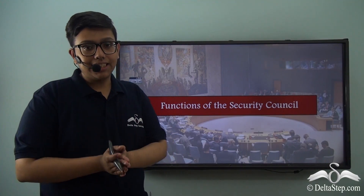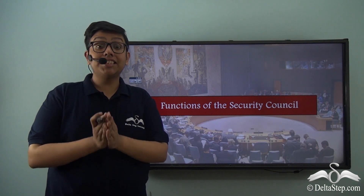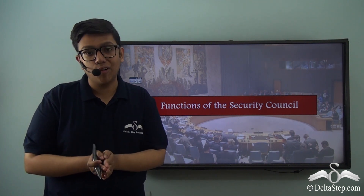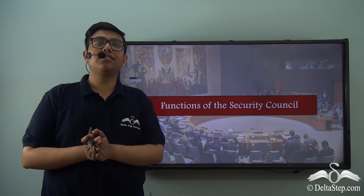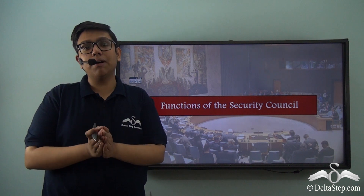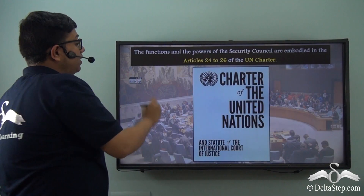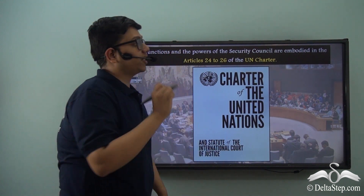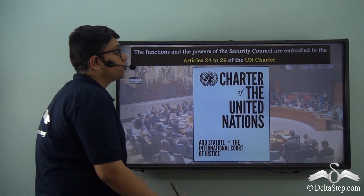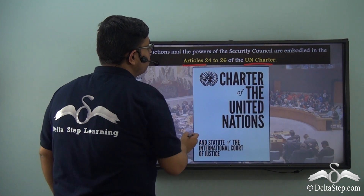Till now we have seen the structure of the United Nations Security Council, which is the principal executive organ of the United Nations. Let us now look at the various functions exercised by the Security Council. The functions and powers of the Security Council are embodied in the United Nations Charter itself, from Articles 24 to 26.